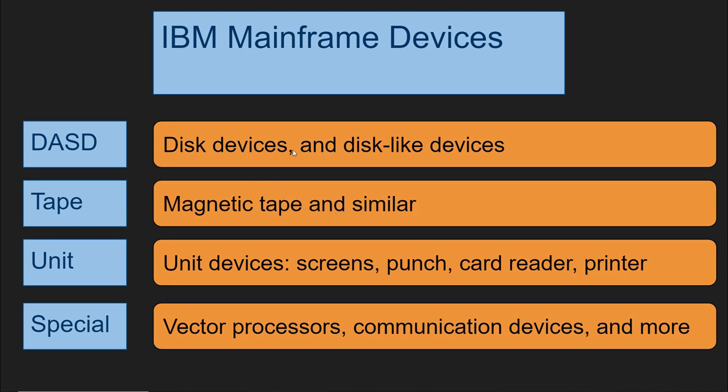In particular, we go into the history of some of those devices such as disk devices, tape, and unit recording devices such as screens, punch card readers, etc. — and try to understand what is the history and how do we get to where we are today.